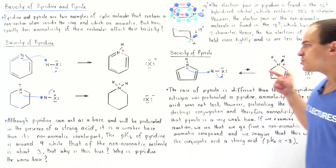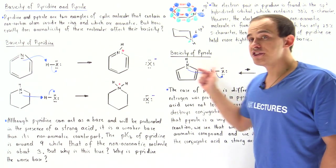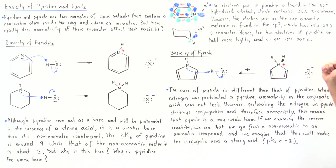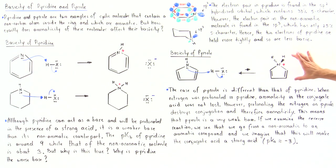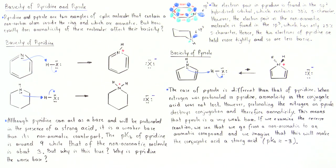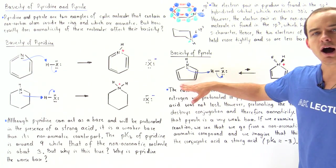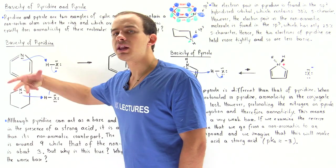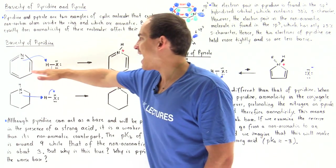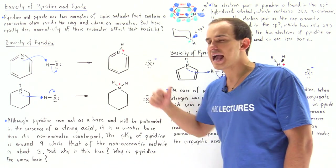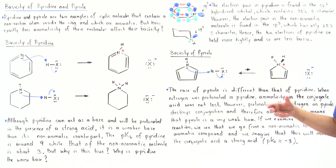Notice that going in the reverse direction, we go from a non-aromatic molecule to an aromatic molecule. Even though pyrrole is a weak base, the conjugate acid is a strong acid with a pKa of about negative 3. This will be a very favorable reaction because we go from non-aromatic to aromatic. But the forward direction — protonating pyrrole — is not favorable because we don't want to destroy that aromaticity. So pyrrole is a very weak base, while pyridine is a relatively weak base, but still more basic than pyrrole, because at least pyridine's conjugate acid retains aromaticity.